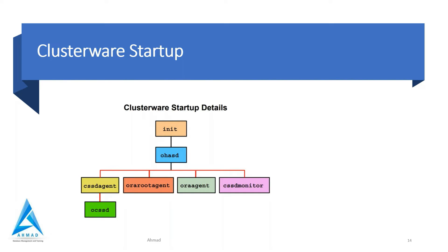After discovering the voting disk, it will join the cluster, and after that cssd agent monitors the cluster and provides IO fencing also. Another interview question: which process provides IO fencing? The answer is cssd agent. This service was earlier known as OPROCMD - Oracle Process Monitor Daemon - but now it is cssd agent. When this process fails, Oracle Clusterware restarts the node.